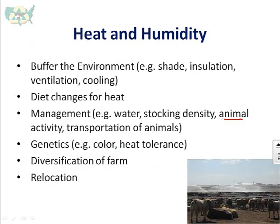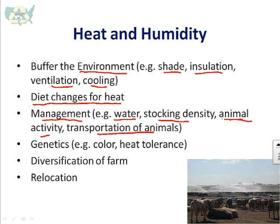Looking at heat and humidity, the general principles for adapting to higher heat and humidity include buffering the environment — shade for outdoor systems, and insulation, ventilation, and cooling for indoor systems. There are also dietary changes for all animal species that are better suited for hotter weather. Management factors include water supply, stocking density, animal activity, and transportation — all things that can put additional stress on animals during heat conditions.